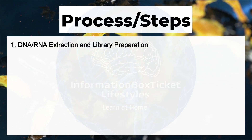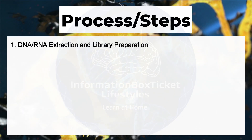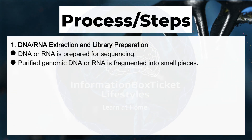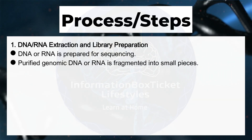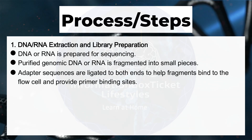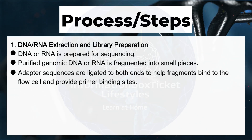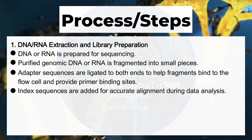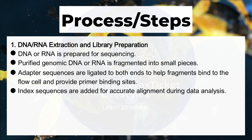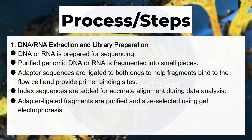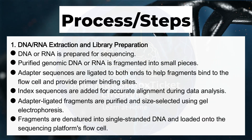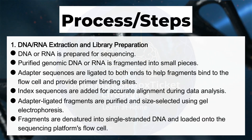Step one: DNA/RNA extraction and library preparation. DNA or RNA is prepared for sequencing, and purified genomic DNA or RNA is fragmented into small pieces. Adapter sequences are ligated to both ends to help fragments bind to the flow cell and provide primer binding sites. Index sequences are added for accurate alignment during data analysis. Adapter-ligated fragments are purified and size-selected using gel electrophoresis, then denatured into single-stranded DNA and loaded onto the sequencing platform's flow cell.